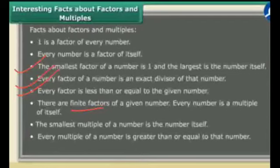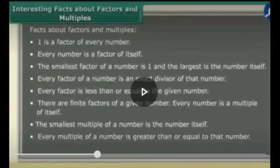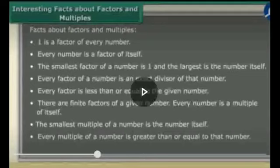Every number is a multiple of itself. We have found the multiples of 5: 5 times 1 is 5, 5 times 2 is 10, 5 times 3 is 15, 5 times 4 is 20, 5 times 5 is 25. So every number is a multiple of itself.